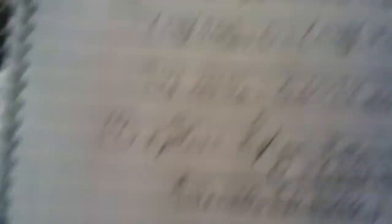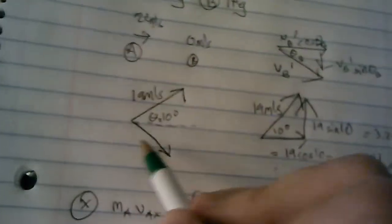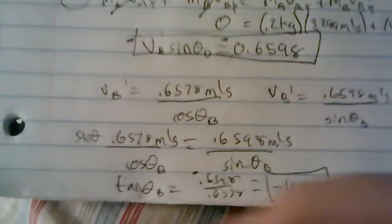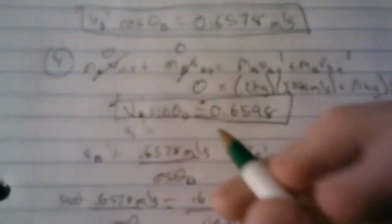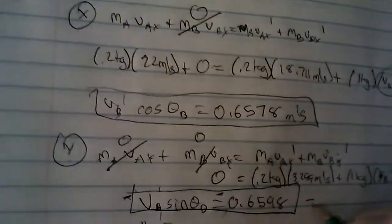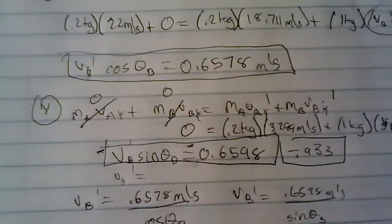What does that mean? That means that when A hit B, that's the angle that B went off at. So now that we have negative 45 degrees, we can plug that back into this equation to find what VB prime is. So it's going to equal 0.6598 divided by sine of 45, negative 45 even. So once we get that value, we see that it is negative 0.933. So that is our velocity, and this video is very long.